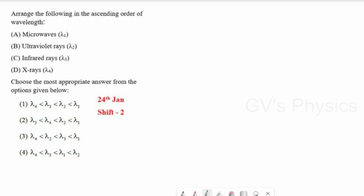We will see the first question: arrange the following in the ascending order of wavelength. To handle this question, first we will write the 7 types of EM waves: radio, micro, infrared, visible, ultraviolet, X-ray, and gamma.